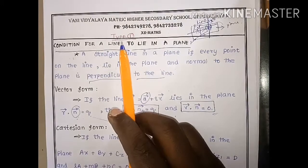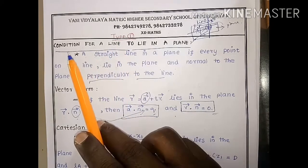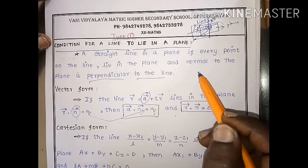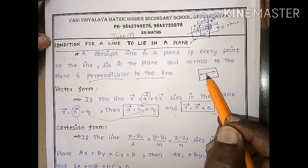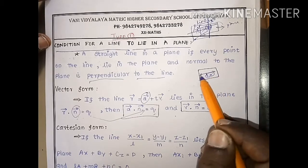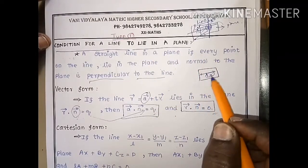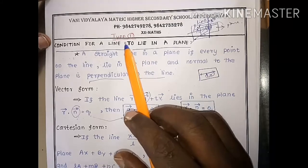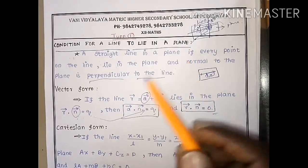Next we see Exercise 6.8. There are three types of concepts in this exercise. First, we have to see Type 1 — the condition for a line to lie in a plane. We need to verify that the given line lies in the plane. Verify that — first the definition.